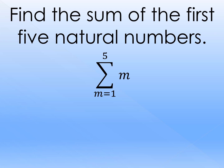If we expand the sigma notation, it will be 1 plus 2 plus 3 plus 4 plus 5. So instead of writing m, we write 1 for the first term, and 2 for the second term, and so on. Adding all the numbers: 1 plus 2 is 3, plus 3 is 6, plus 4 is 10, and plus 5 is 15. Therefore, the sum of the first five natural numbers is 15, and applying the sigma notation, we can represent that as summation of m where m starts from 1 up to 5.